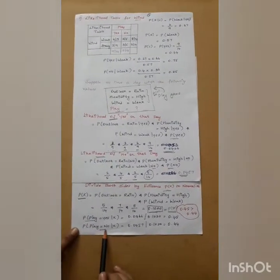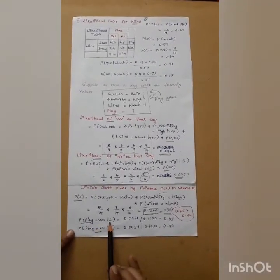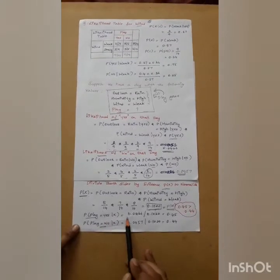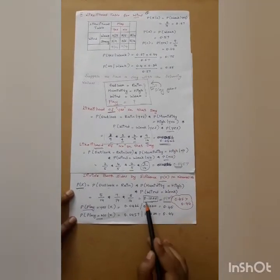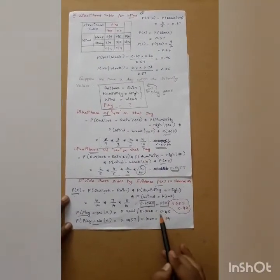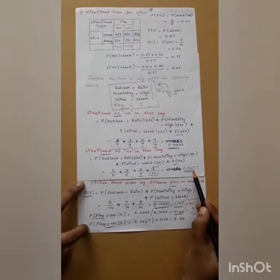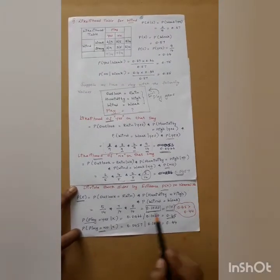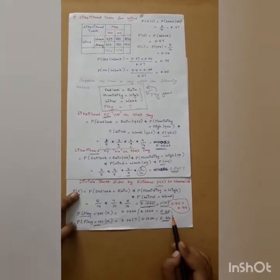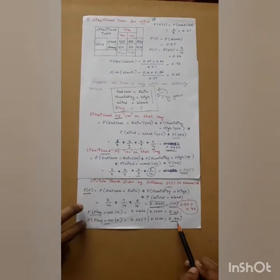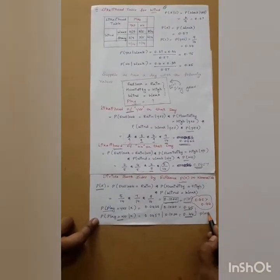The probability of play equals yes given the evidence is 0.0466 divided by P(x), giving 0.45. The probability of play equals no is 0.0457 divided by P(x), giving 0.44. Since 0.45 is greater than 0.44, the final answer is that the game can be played.